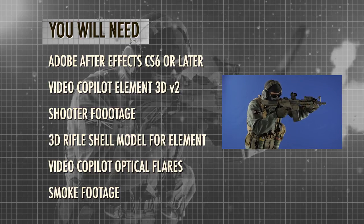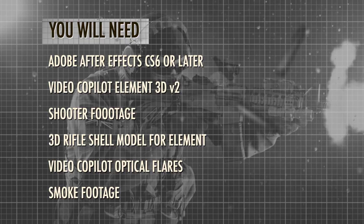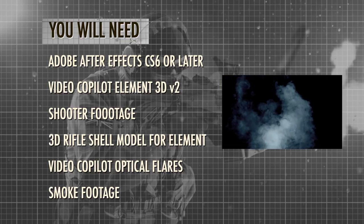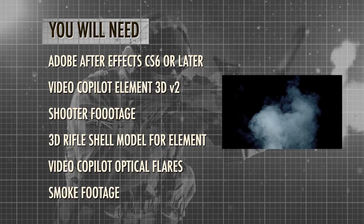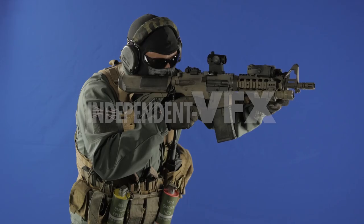You will need the Independent VFX 3D rifle shell model, or a similar model - you can use one from the Projectile Weapons Pack if you have it, or find a free 3D bullet model on the web. Optical Flares is really nice to have for this tutorial, but if you don't have it you can follow along using the standard flares in After Effects. For smoke elements, there's great footage in the Video Copilot Action Essentials pack, or you can download excellent free smoke stock footage from Action VFX.